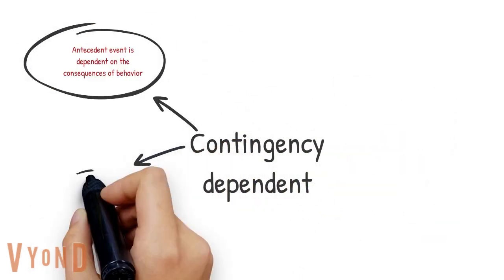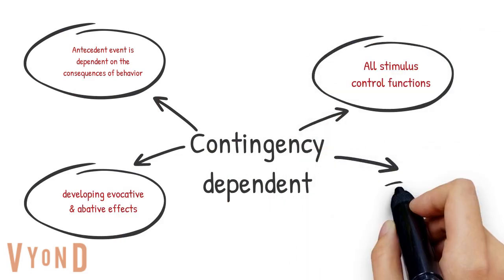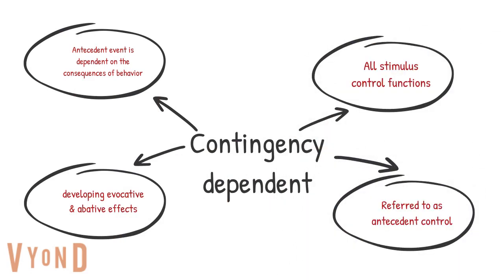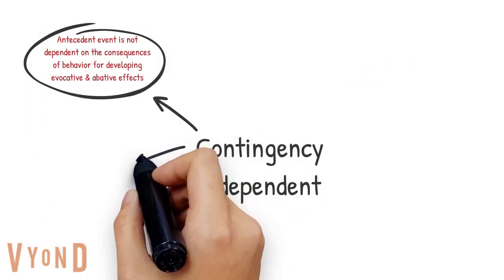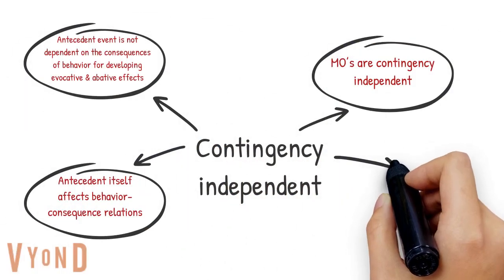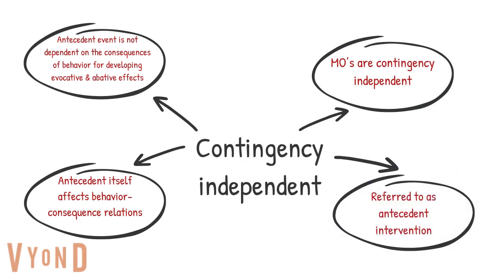There's the contingency dependent and the contingency independent. For the contingency dependent, the antecedent event is dependent on the consequences of behavior for developing evocative and abative effects — so that means all stimulus control functions, referred to as antecedent control. For contingency independent, the antecedent event does not depend on the consequences of behavior to develop these evocative and abative effects. The antecedent itself affects the behavior-consequence relations.